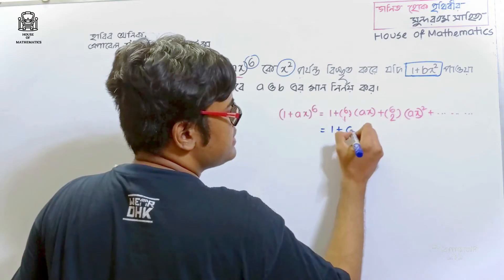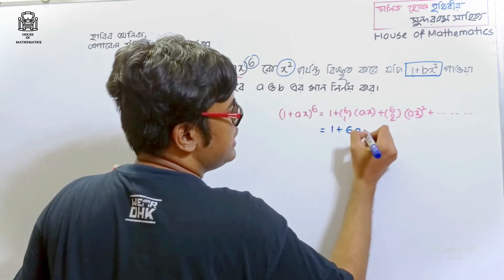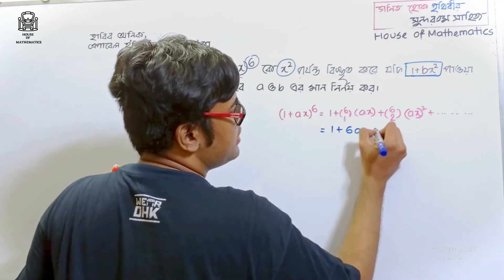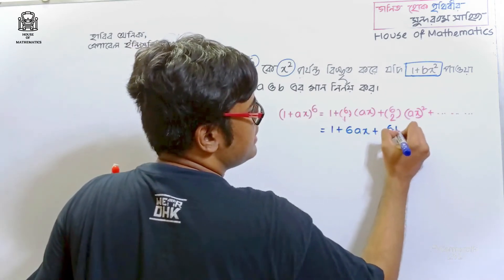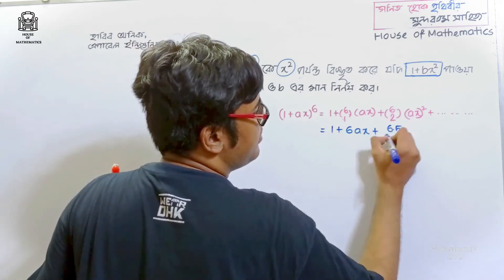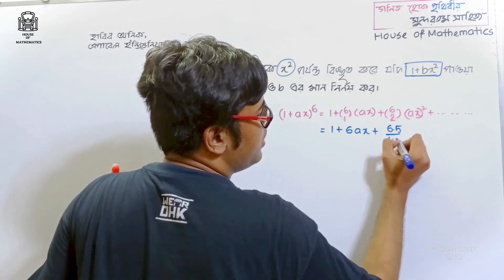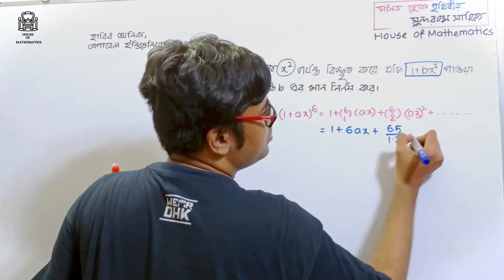So the expansion becomes: 1 plus 6ax plus 15a squared x squared plus dot dot dot.